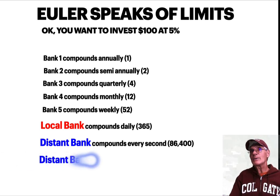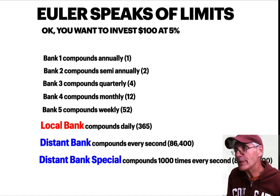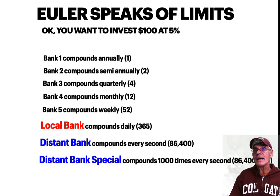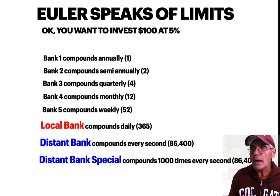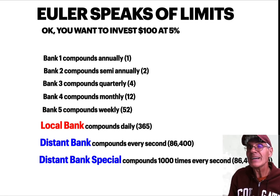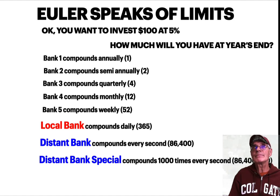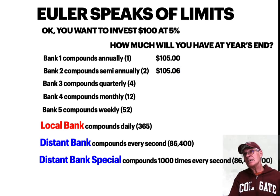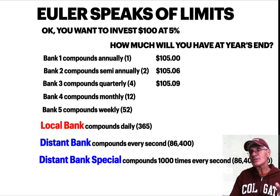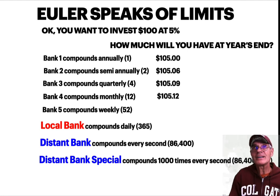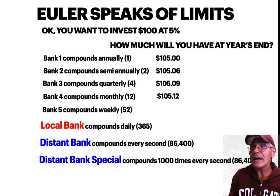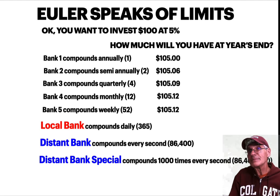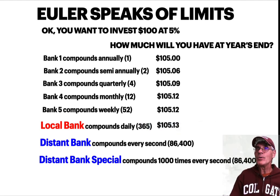While driving, another ad says the distant bank now has a special: they compound a thousand times every second — over 86 million times a day. You call your accountant brother and ask how much you'll have after a year. He runs the numbers: annually you'd have $105.00; semi-annually $105.06; quarterly $105.09; monthly $105.12; weekly $105.12; and your local daily-compounding bank would give you $105.13.